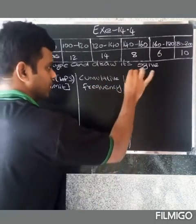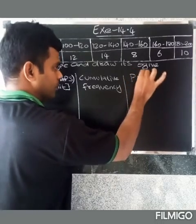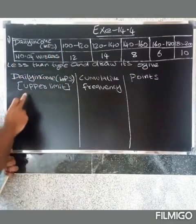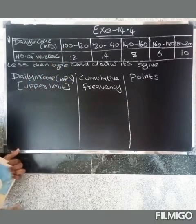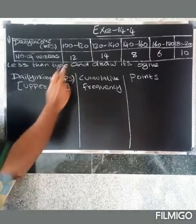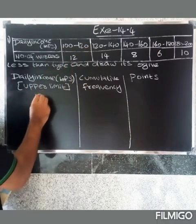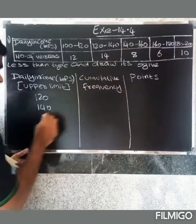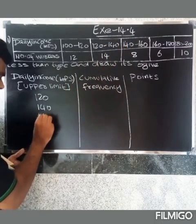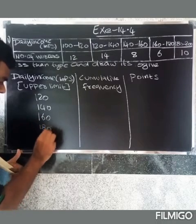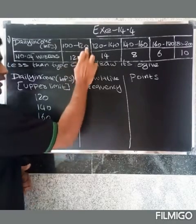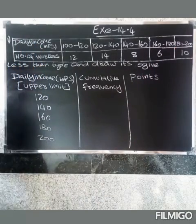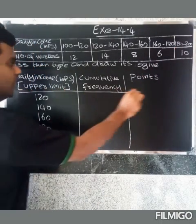So we need to get the points to plot on the graph. First, we list the daily income upper class limits: 120, 140, 160, 180, and 200. Now we calculate the cumulative frequency.